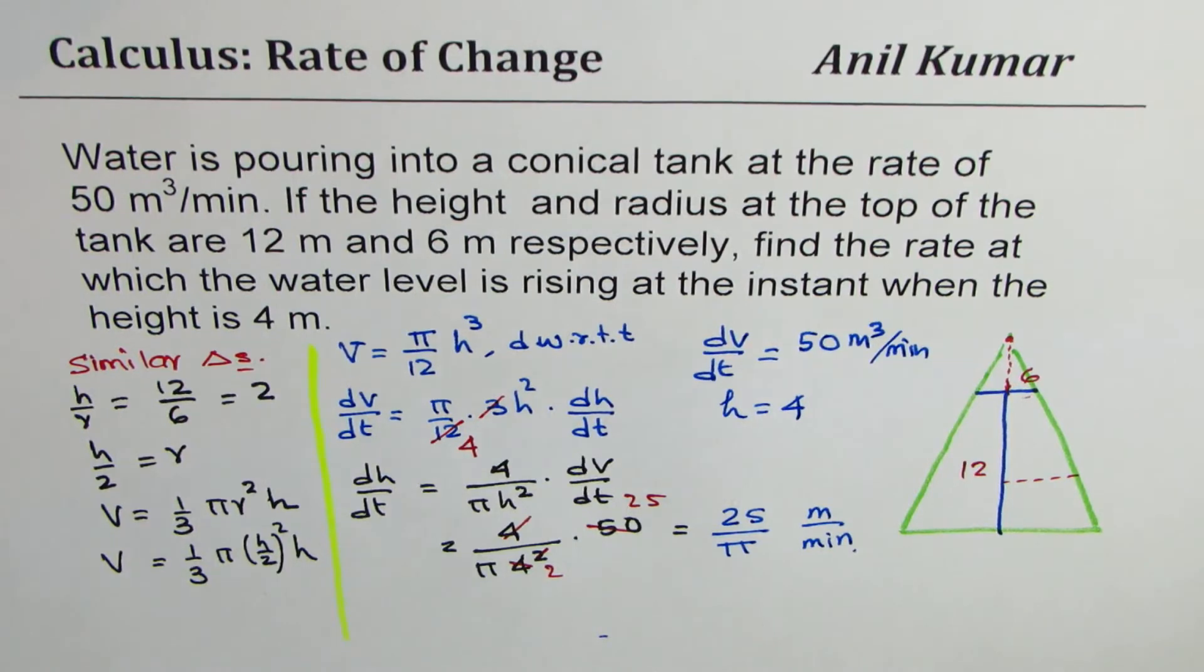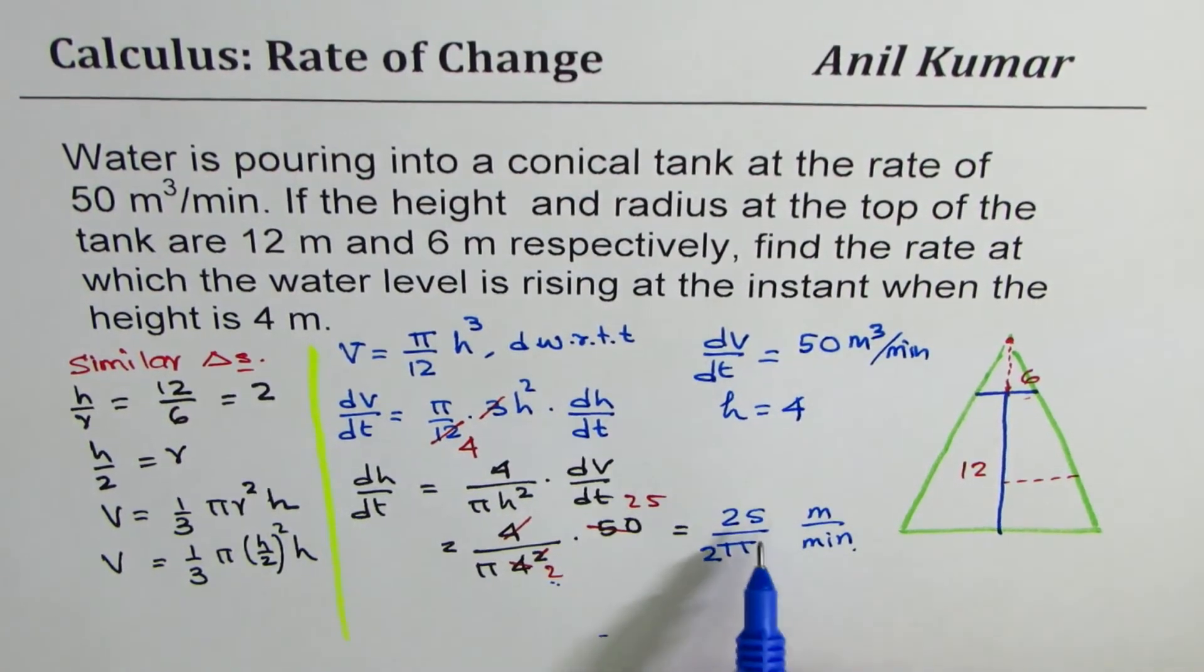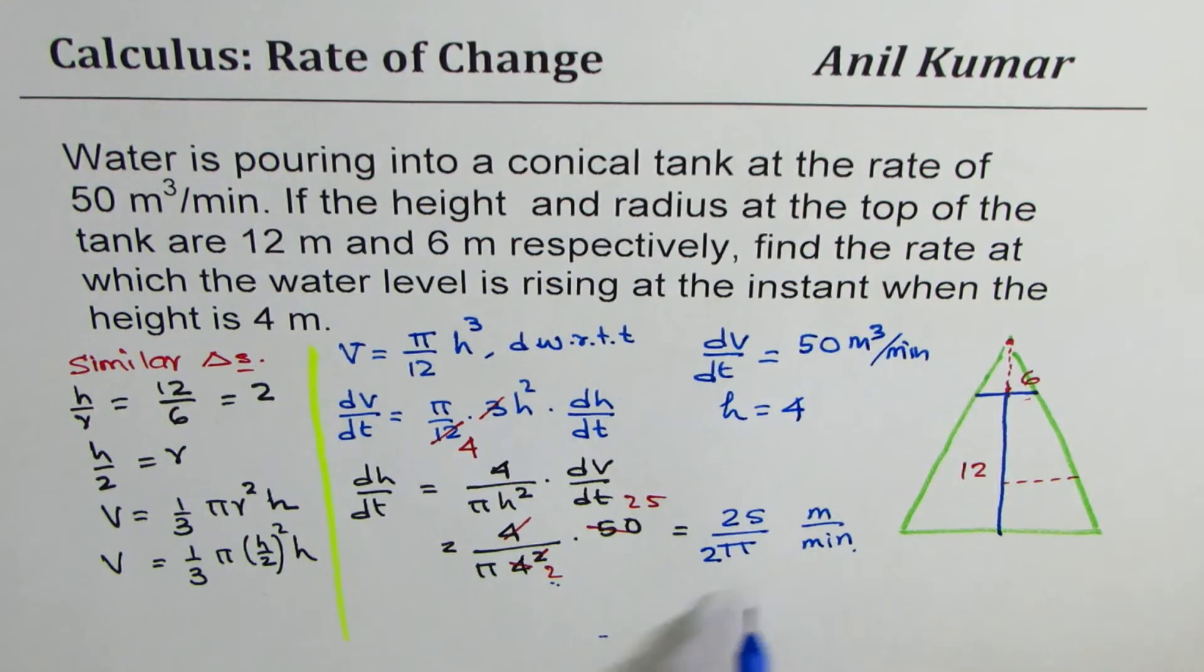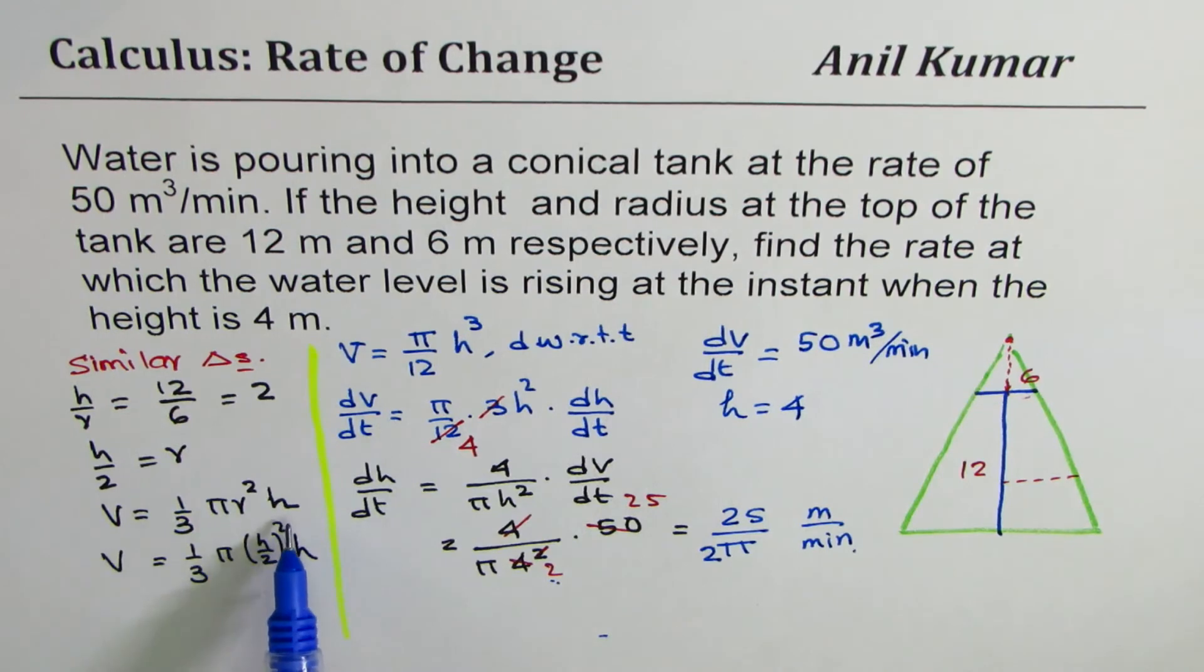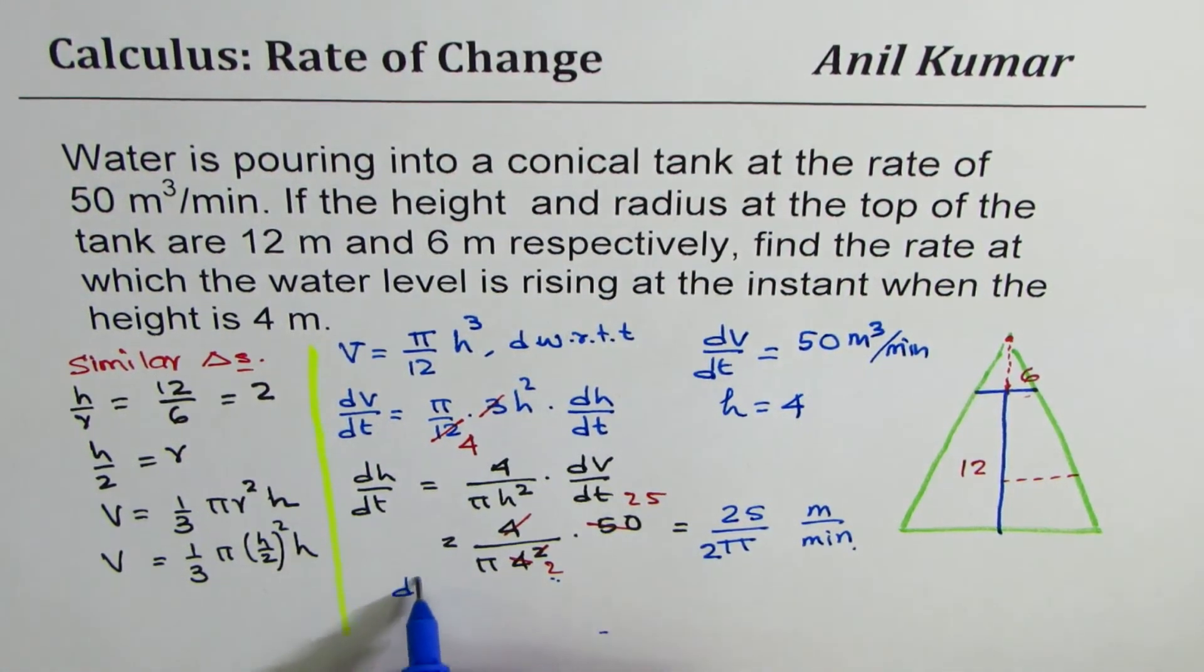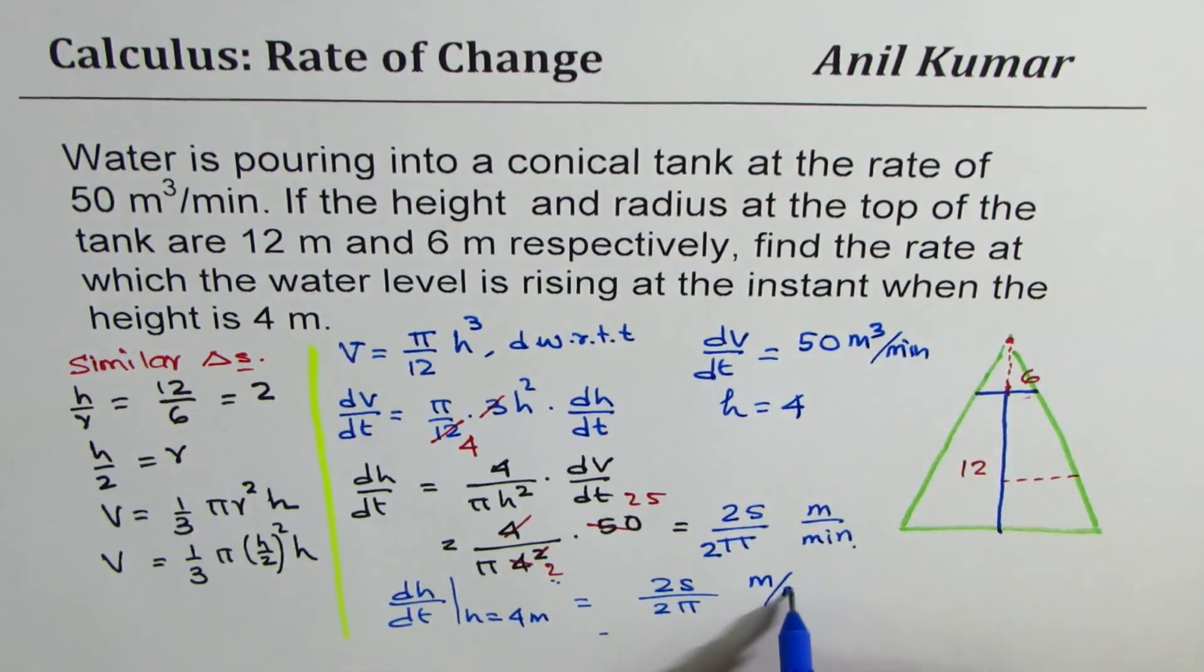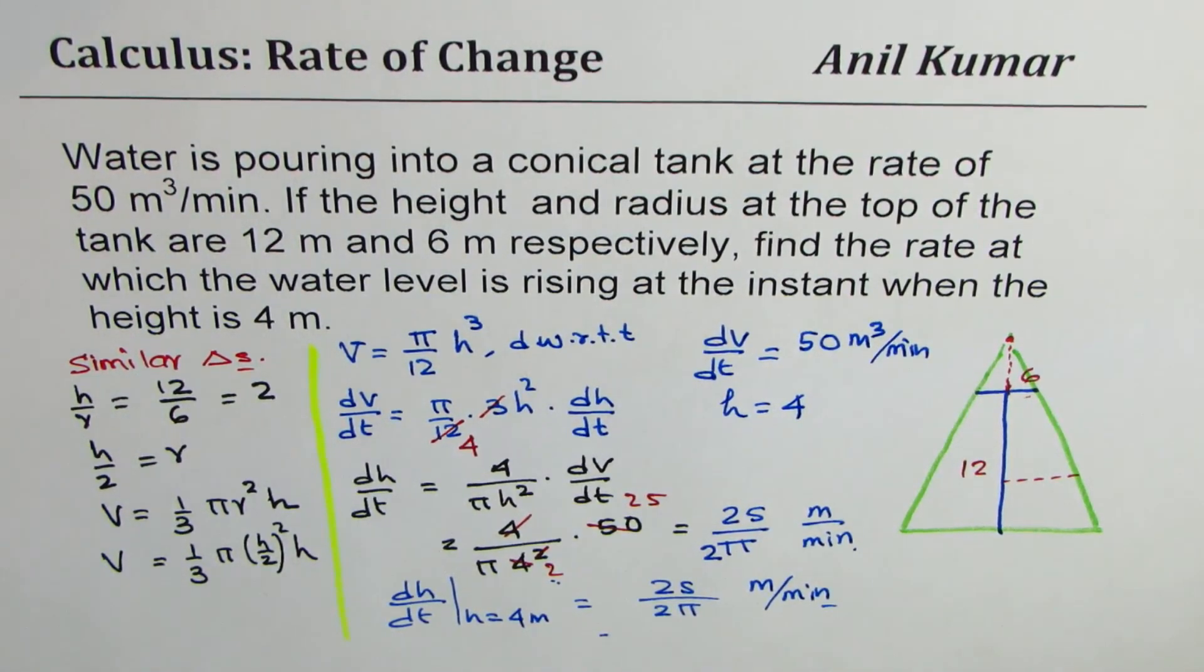And the units for height will be meter per minute. So I hope these steps are absolutely clear. And so, yeah, I forgot to write this 2. Yeah, 2 pi. 25 over 2 pi meters per minute. So I hope the steps are absolutely clear. Basically, you have to use similar triangles to relate height with radius. Once you do that, then you write volume as a function of height. And then differentiate with respect to time both sides to get your answer. So we get dh dt when height equals 4 meters equals 25 over 2 pi meters per minute. Is it okay? So that is how it should be done. I hope that helps. Thank you and all the best.